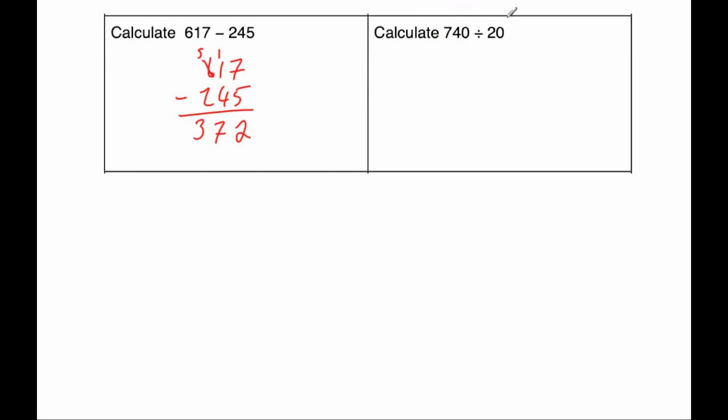Our next question is 740 divided by 20. So let's start by short division method, 740 divided by 20. So 20 into 7 doesn't go, so that's 0, remainder 7. 20 into 74, well that's 20, 40, 60. That's going to be 3, remainder 14. And 20 into 140, well that would be 7 because 7 times 20 would be 140. So the answer would be 37.